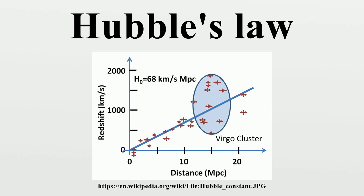For distances d larger than the radius of the Hubble sphere R_HS, objects recede at a rate faster than the speed of light. Since the Hubble constant is a constant only in space, not in time, the radius of the Hubble sphere may increase or decrease over various time intervals. The subscript zero indicates the value of the Hubble constant today. Current evidence suggests that the expansion of the universe is accelerating, meaning that for any given galaxy, the recession velocity dD/dt is increasing over time as the galaxy moves to greater and greater distances. However, the Hubble parameter is actually thought to be decreasing with time, meaning that if we were to look at some fixed distance d and watch a series of different galaxies pass that distance, later galaxies would pass that distance at a smaller velocity than earlier ones.